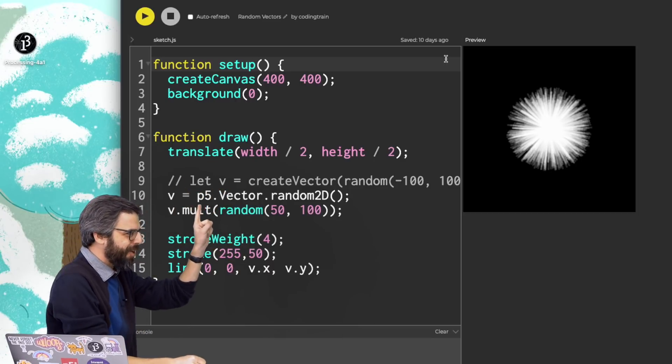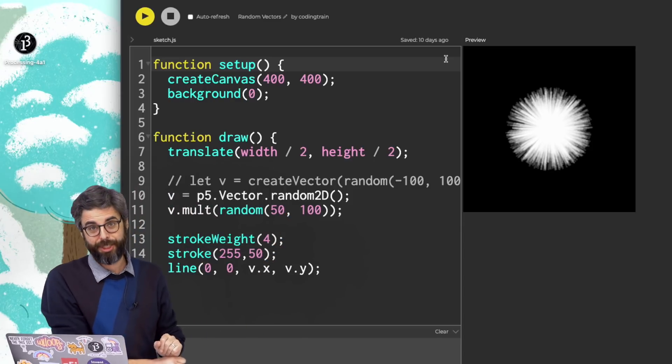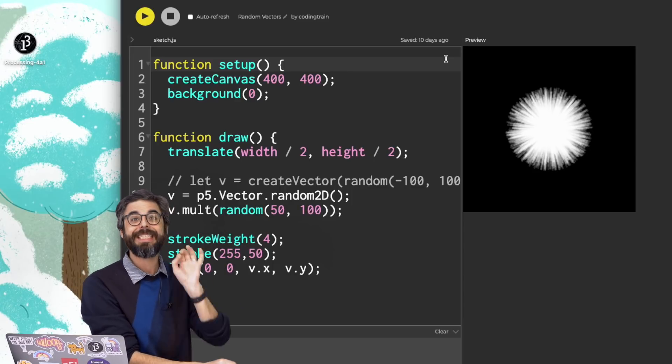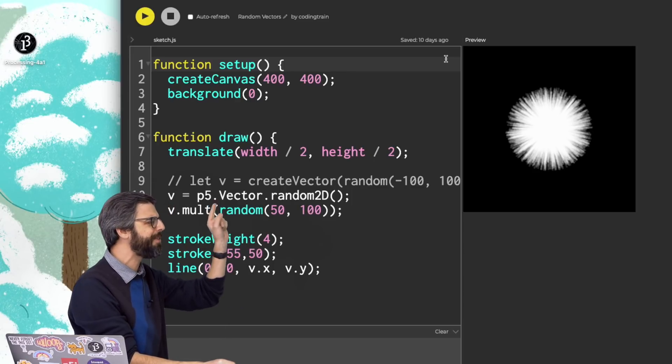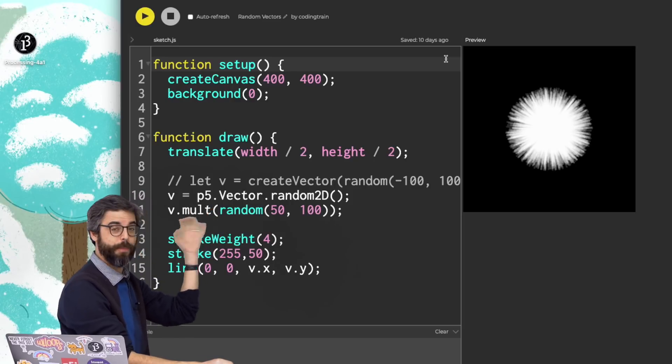But this here, p5.vector.random2d, might look a little strange to you. And this is an example of a static function. Random2d is a static function. It's called on p5.vector rather than this function, mult for multiply, which is called on v, the object itself. Let's look at this a bit more closely.